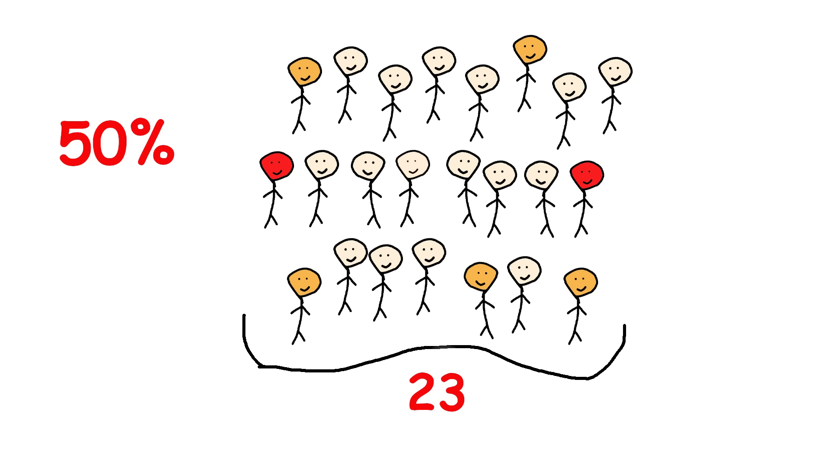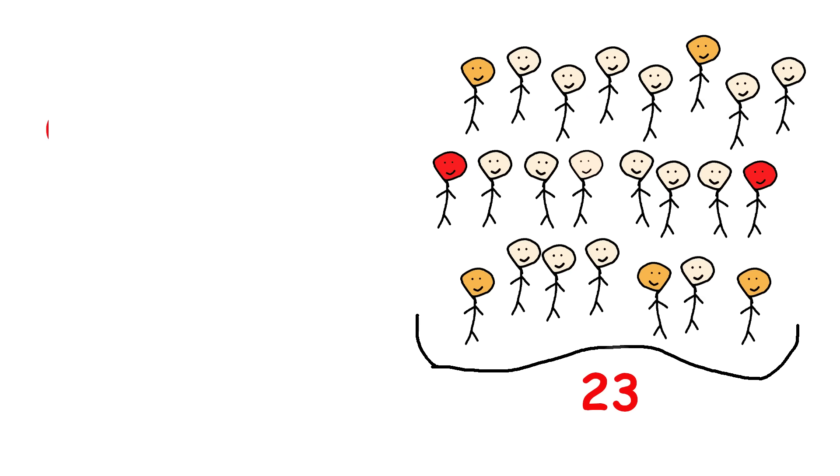At first, it seems unlikely that 23 people would be enough for a 50% chance of shared birthdays. But it makes more sense when you consider the number of birthday comparisons. With 23 people, there are 23 times 22 divided by 2 equals 253 pairs of people to compare, which is much more than half the number of days in a year, 365.